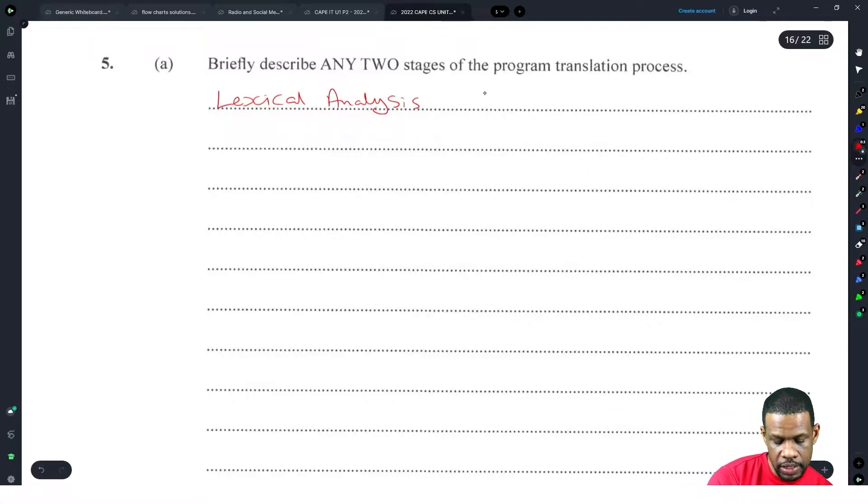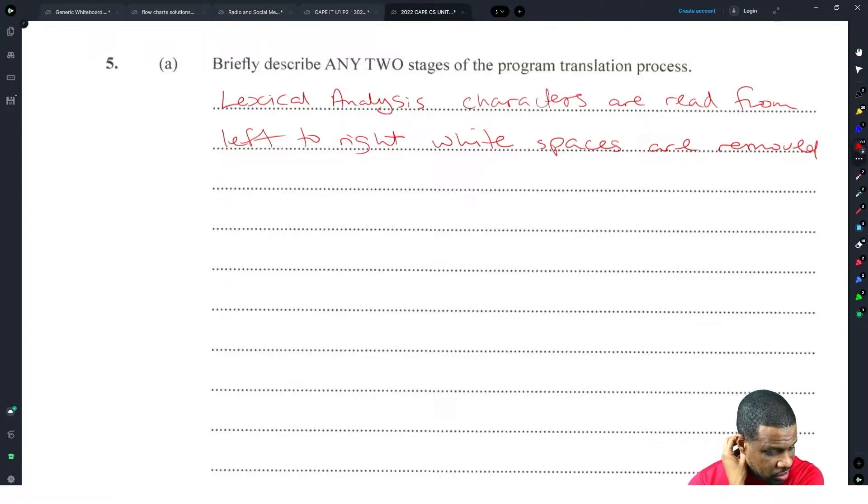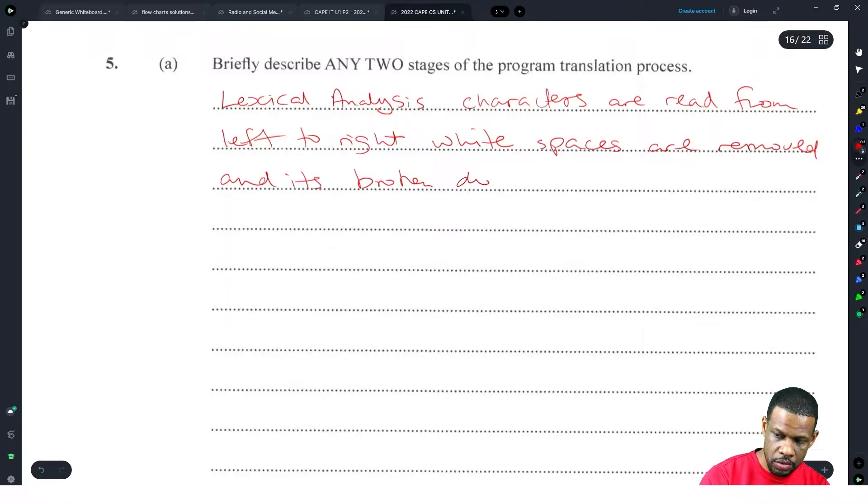Characters are read from left to right. White spaces are removed and it's broken down into tokens.